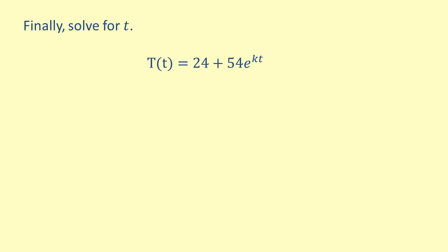We now have the equation for T of t. The final equation is capital T of t equals 24 plus 54 times e to the negative 0.0222t.